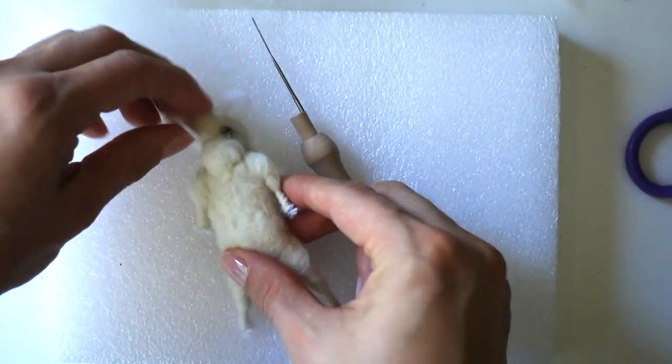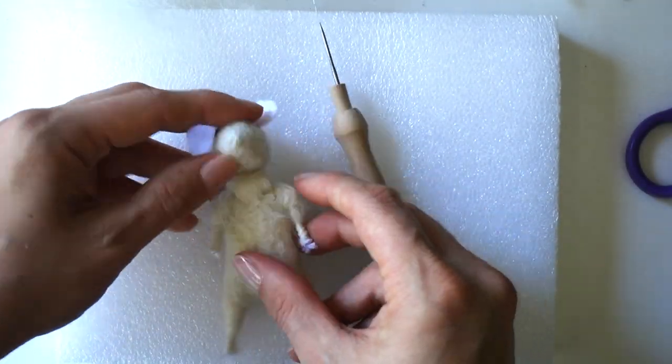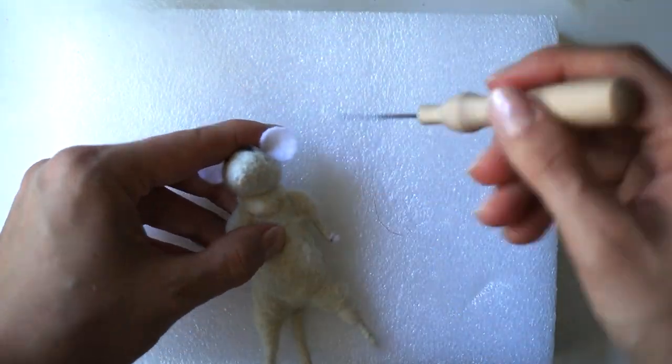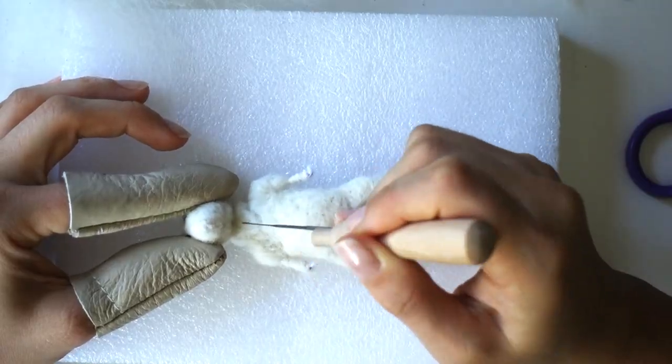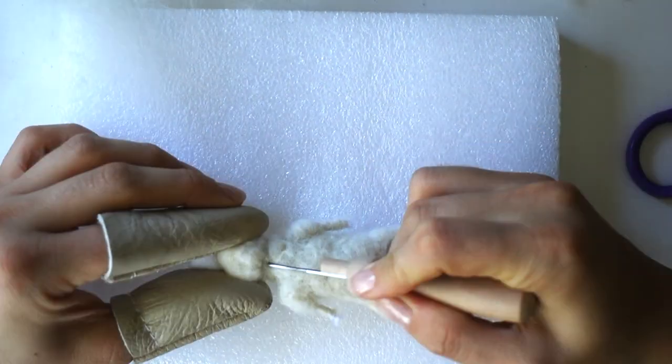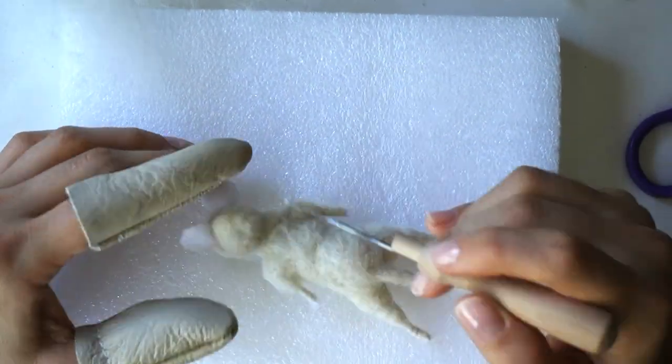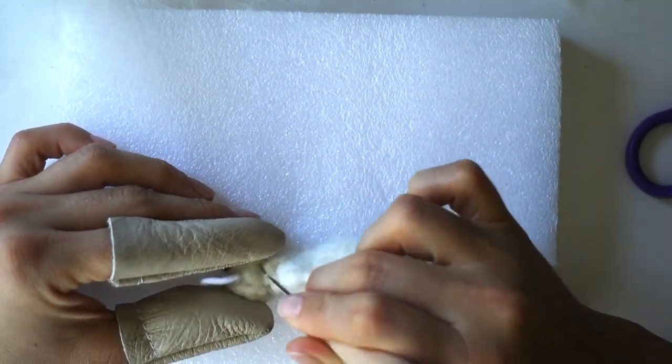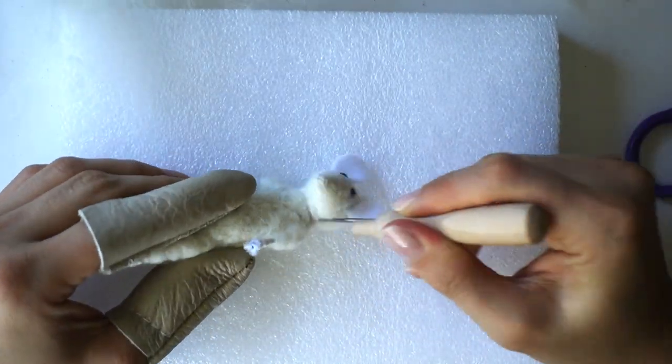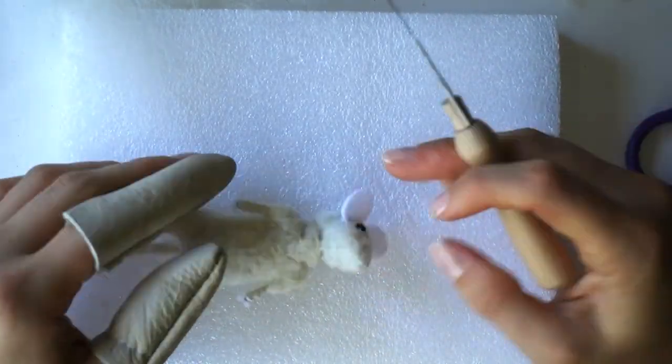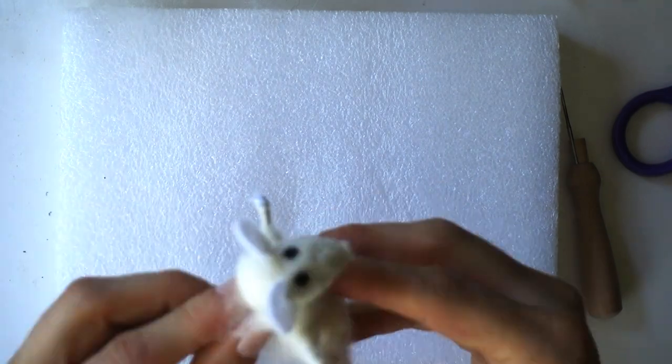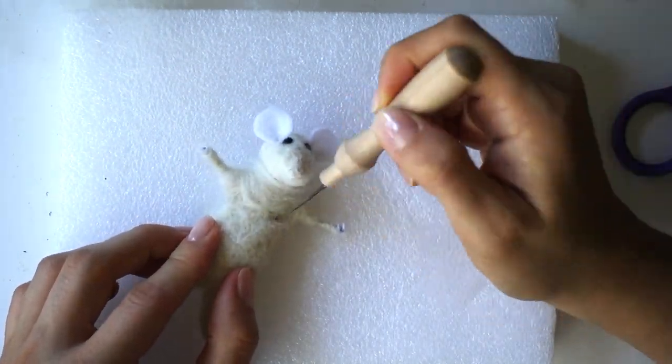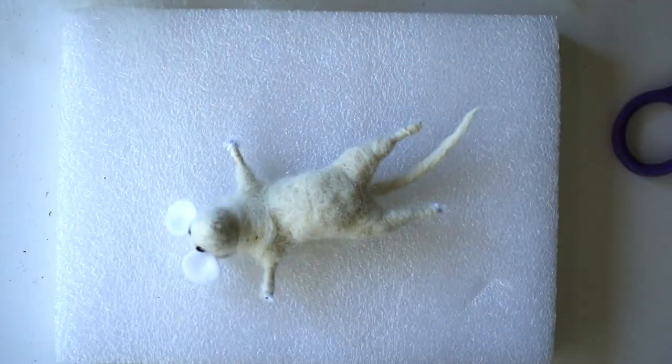Add the head by holding it firmly to the body and stab all around the neck. Pierce the needle from the neck into the head and then from the head to the neck. Add more wool around the neck and continue stabbing it until the head is attached well to the body.